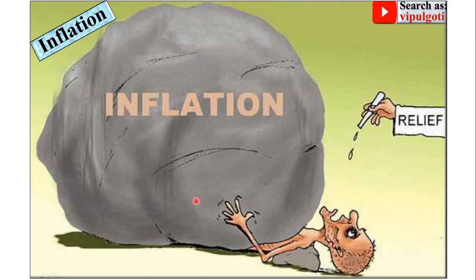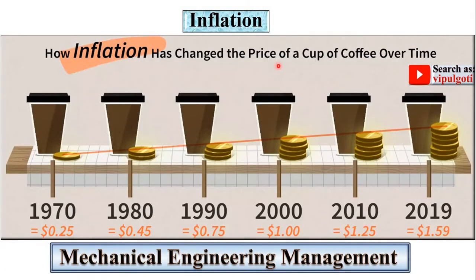Here you can see the effect of inflation on people. Inflation has changed the price of a cup of tea over time — in 1970 it was $0.25, in 1980 it was $0.45, then gradually increasing to $1.59 in 2019. So the value of money decreases due to inflation.